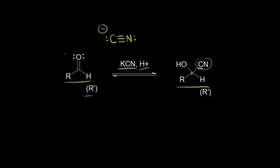On our carbonyl, the oxygen is partially negative and the carbonyl carbon is partially positive, so the carbonyl carbon is our electrophile. Our nucleophile is going to attack our electrophile — these opposite charges attract, and the electrons from cyanide attack the carbonyl carbon, pushing these electrons off onto the oxygen. Let's draw the intermediate.